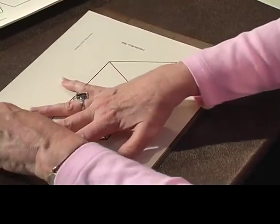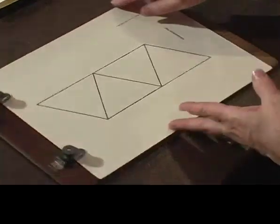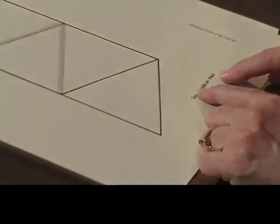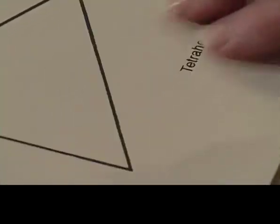But I will cut out one that I have over here. Let's see, where is that one? This one is a tetrahedron. And in case you forget, what's nice about this for the sighted person that's helping is that the name, again, is right there, Tetrahedron Net. So you'll know what it is.